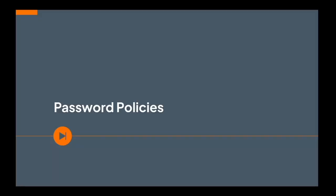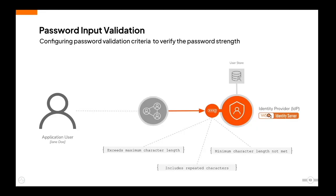Now let's check out the password policy management features supported in WSO2 Identity Server. WSO2 Identity Server enables verifying the password strength using regular expressions, commonly known as regex. In addition to the default minimum and maximum character length verification, you can add more factors to verify the password strength. This enables compliance with password policies deemed necessary through various regulations. For example, we can restrict the user from entering the same character pattern for both username and password.